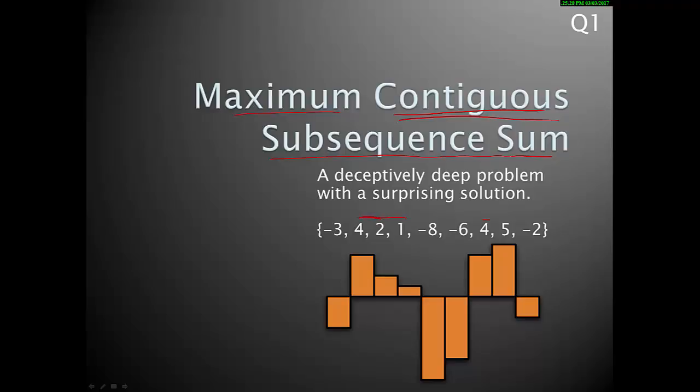Contiguous means that all the elements in your subsequence need to be bordering each other. So they have to be bordering. So if I take a look at this guy, these three give me 7. And is there any one that's bigger than that?